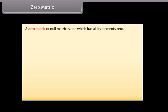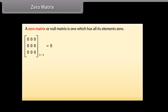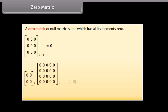Zero matrix: a zero matrix or null matrix is one which has all its elements zero. Here is a 3 by 3 zero matrix, and here are three more examples of zero matrices. The zero matrix is denoted by 0.